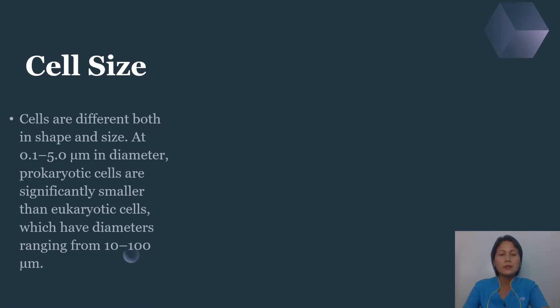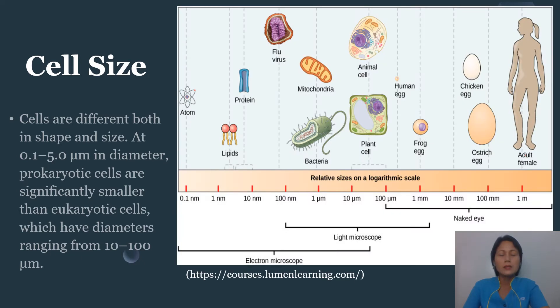Cells are different both in shape and size. At 0.1 to 5 micrometers in diameter, prokaryotic cells are significantly smaller than eukaryotic cells, which have diameters ranging from 10 to 100 micrometers. The small size of prokaryotes allows ions and organic molecules that enter them to quickly spread to other parts of the cell. Similarly, any waste produced within a prokaryotic cell can quickly move out.